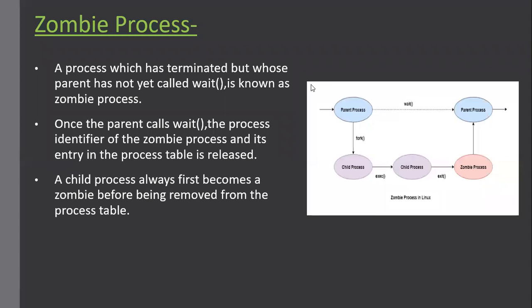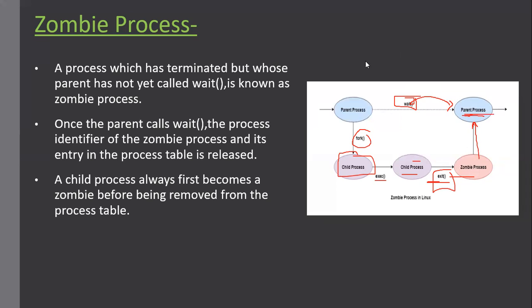Looking at this diagram: the parent process executes the fork system call, creating a child process. The child, using the exec system call, changes its program address space and performs some task. The parent waits for the child to complete. Once the child process has terminated, it executes the exit system call and becomes a zombie process. Once the parent receives the signal using wait, the child's entry is removed from the process table and it is no longer a zombie process, and then the parent process continues.